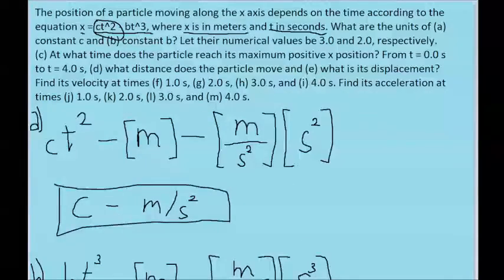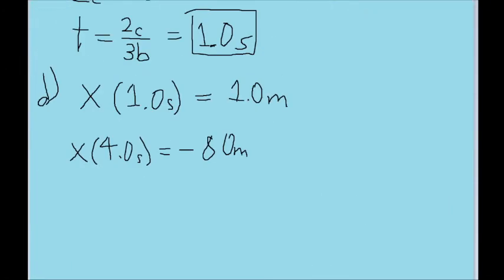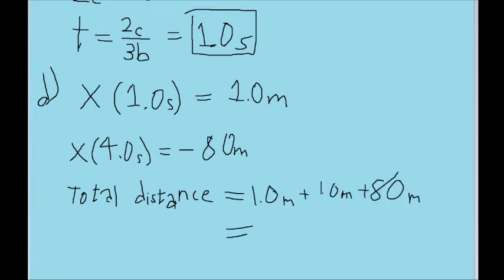Since part D is asking for the total distance that the particle has moved, we need to add these three parts together. So the total distance that it's traveled will be 1 meter, plus 1 meter, plus the 80 meters, which adds up to a total of 82 meters. So in total, the particle has traveled 82 meters.